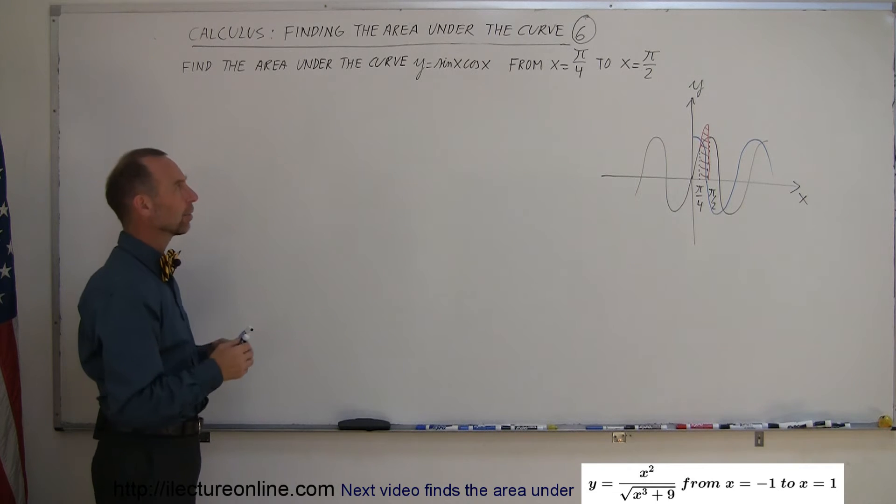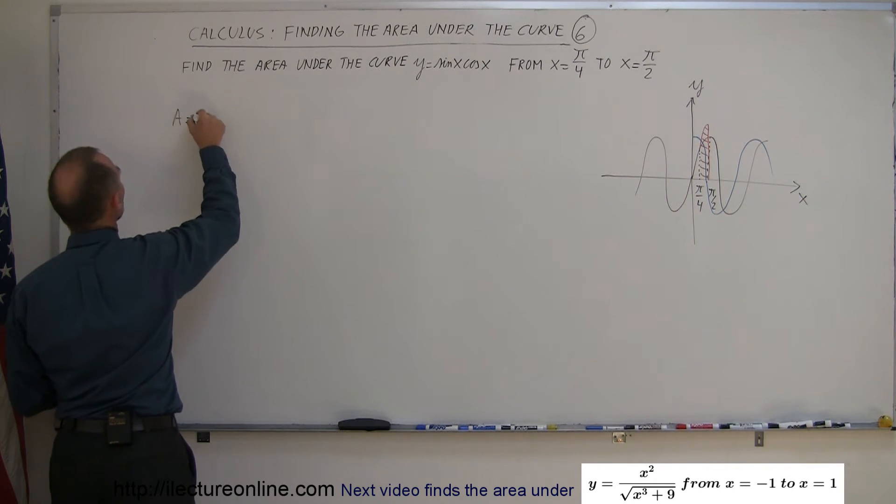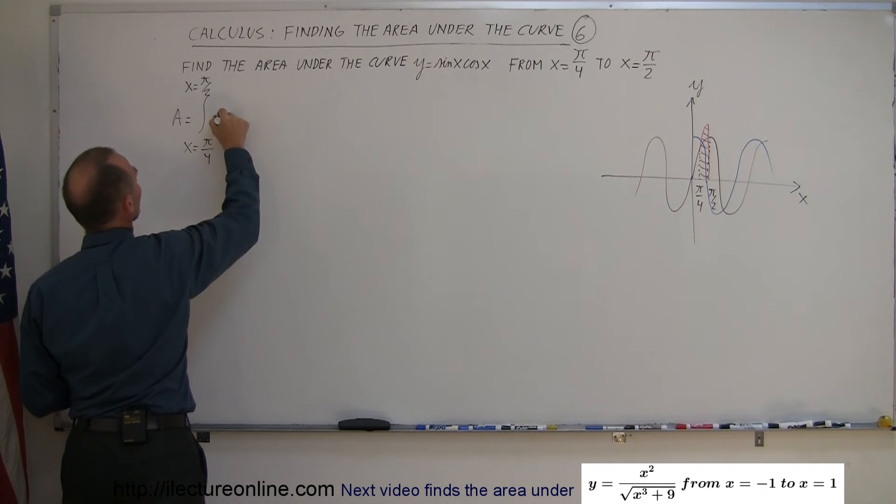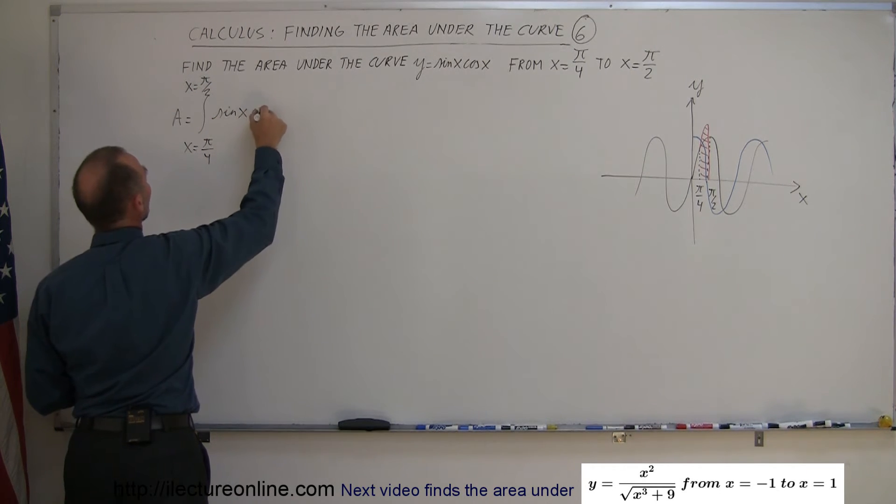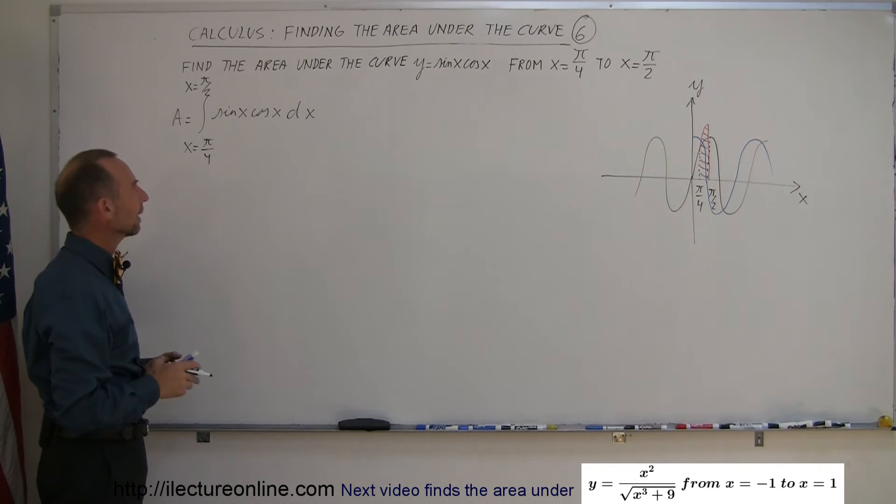Now, mechanically, how do we get through this problem? Well, first of all, we can say that the area is equal to the integral from x equals pi over 4 to x equals pi over 2 for the function sine of x cosine of x times dx. All right, how do you integrate that?